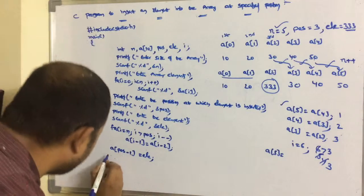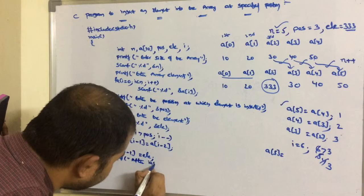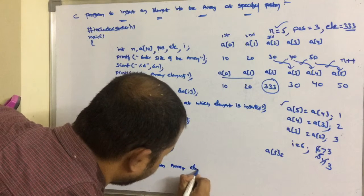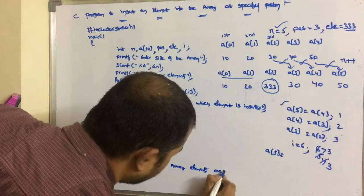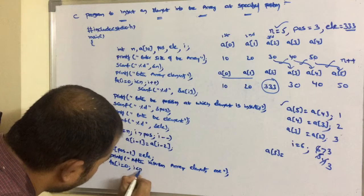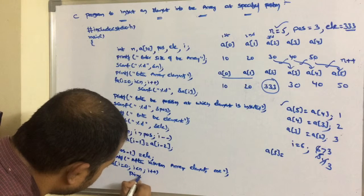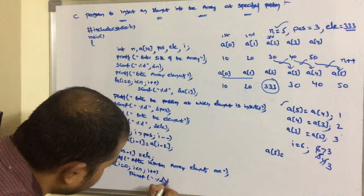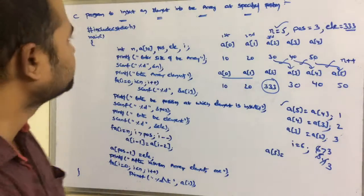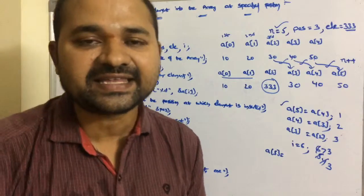Now we display the output: printf after insertion array elements are, then a for loop from i equals 0, i less than n, i plus plus, with printf %d a[i]. In this way, we can write a C program to insert an element into the array at a specified position.